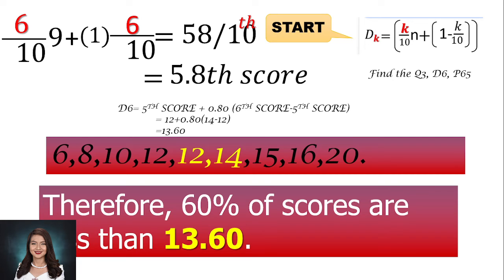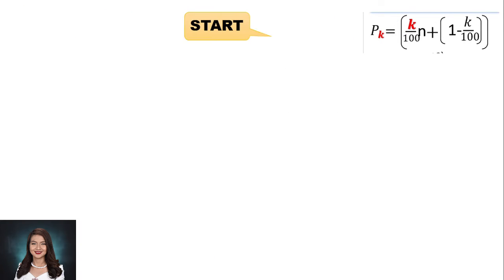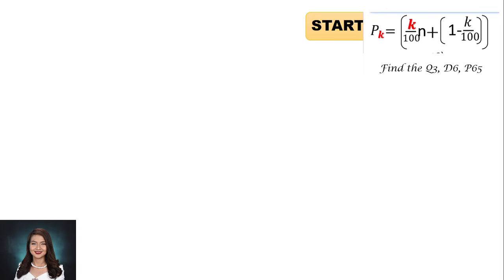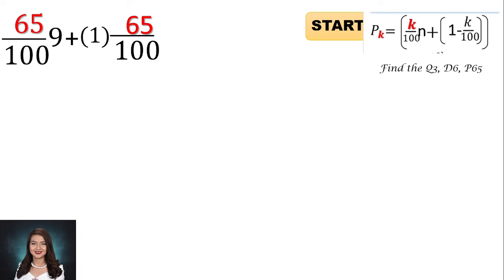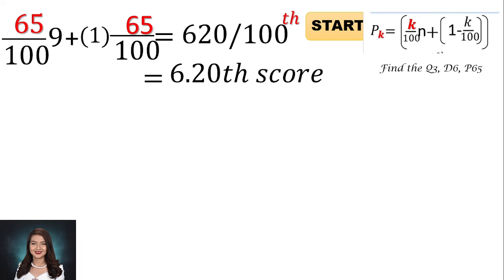Remember that in decile, Decile 1 represents 10 percent, Decile 2 represents 20 percent, Decile 3 represents 30 percent, until Decile 6 represents 60 percent, and Decile 9 represents 90 percent. Next, let's compute Percentile 65. Here is the formula. Our K is equal to 65, so we write 65 over 100 multiplied by 9, plus 1 minus 65 over 100. If we calculate this, we get 620 over 100, and dividing gives us 6.20.